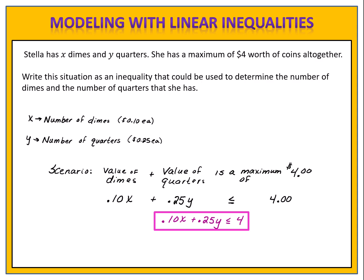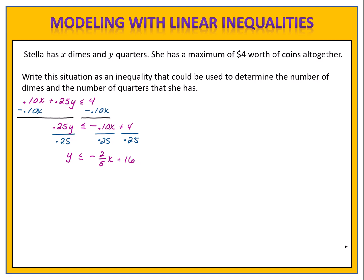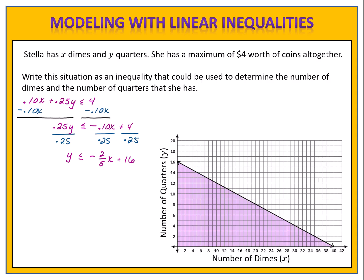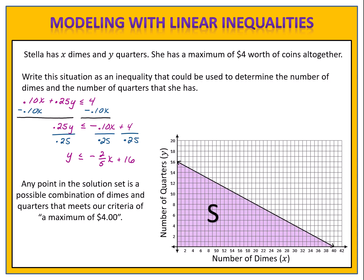We can use this inequality to understand the scenario even further. If we take our inequality, rewrite it in slope-intercept form, construct the graph, and identify the solution set, we can see all the pairs of numbers that meet our criteria of a maximum of $4. For example, the point (24, 3) represents 24 dimes and 3 quarters. If Stella has 24 dimes and 3 quarters, that would equal a total of $3.15, which meets the criteria. There are many points within the solution set, but we must be careful to reject solutions that don't make sense — for example, 3.5 quarters or 5.5 dimes are not viable, so common sense must prevail.